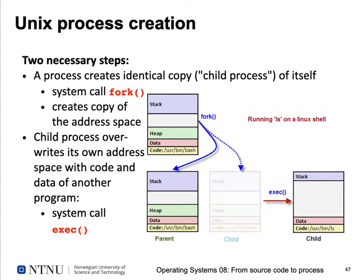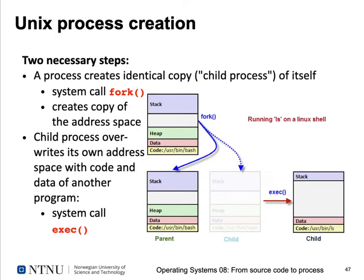Let's take a more detailed look at Unix process creation. There are two necessary steps to create a process in Unix that executes another program. The first step is to create an identical copy of the process using the fork system call, which creates a copy of the address space. After fork, the parent process address space remains, and the child process has an almost identical copy. When exec is called afterwards, the child process overrides its own address space with code and data of another program.